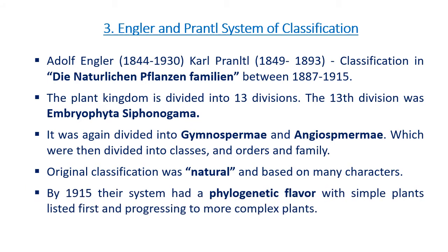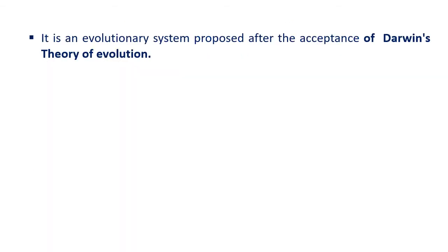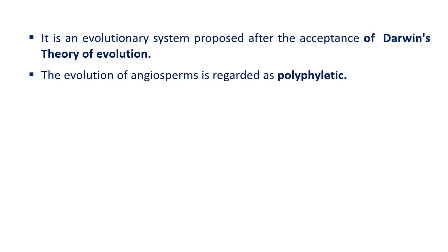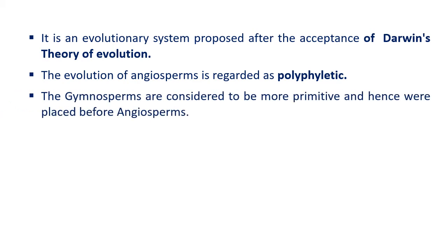By 1915, their system had a phylogenetic flavor, with simple plants listed first and progressing to more complex plants. It is an evolutionary system proposed after the acceptance of Darwin's theory of evolution. The evolution of angiosperms is considered polyphyletic. Gymnosperms are considered more primitive and hence were placed before angiosperms.